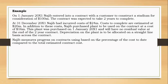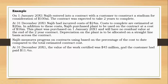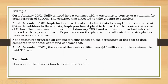Nagy measures the progress on the contract based on the percentage of cost to date compared to the total estimated contract cost. This is different from the original principle — we are measuring progress using the input method based on cost to date, not based on work certified. We are told that at 31st December 20X1, the value of work certified was 45 million dollars and the customer had paid 11.4 million. We won't need the 45 million because we are measuring progress using a different method.